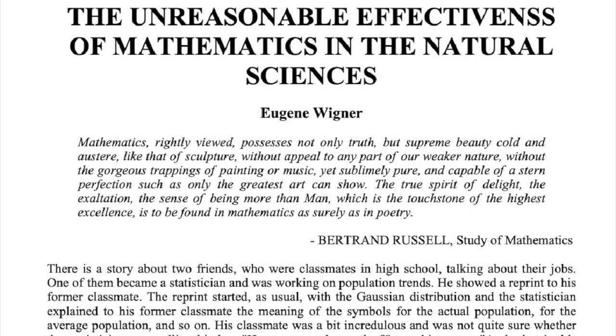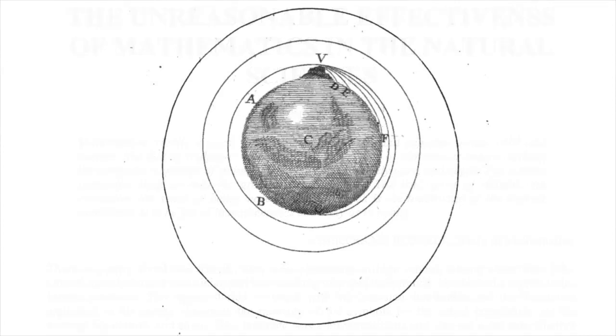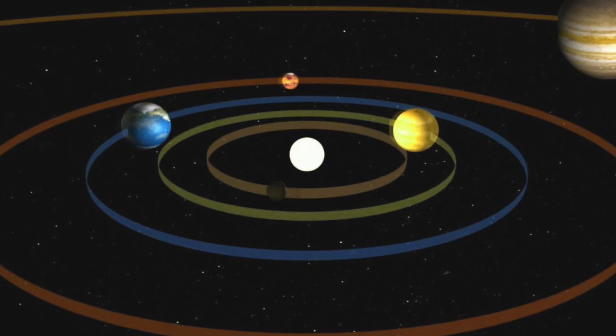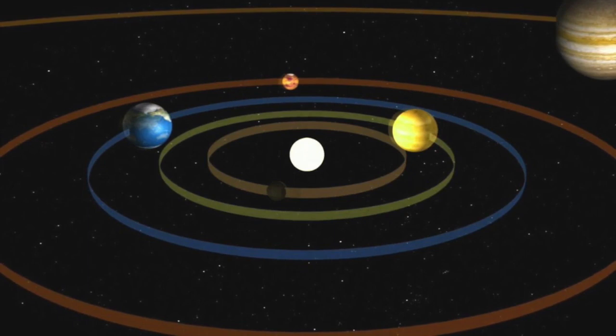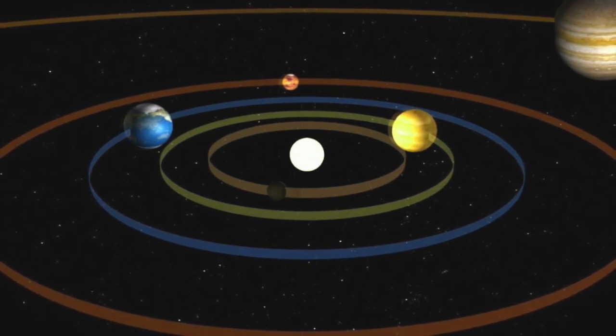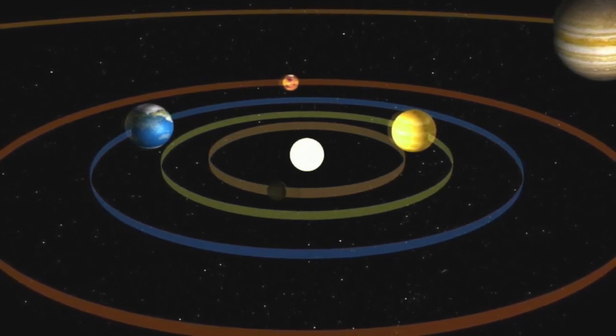A well-known example of this unreasonable effectiveness is Newton's law of gravitation. Newton saw connection between the parabolic paths followed by projectiles on Earth and the motion of the moon and planets in their elliptical orbits. At the time he put forward his law of gravity, he could verify it to an accuracy of only about 4%. Today, we know it holds good to better than one ten-thousandth of a percent.